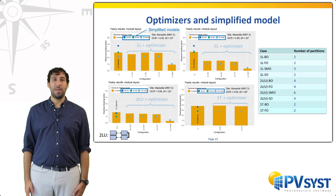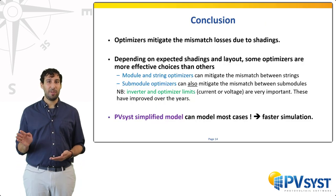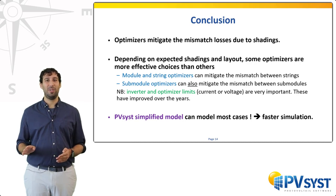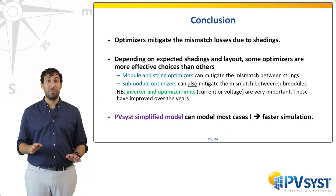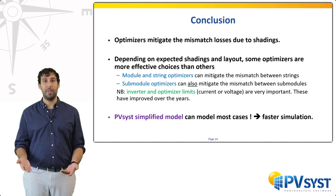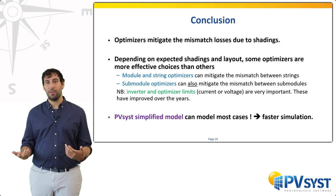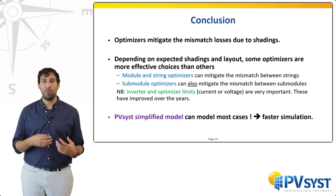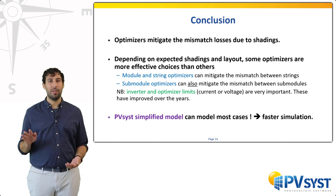To conclude, optimizers are effective at reducing the mismatch due to shadings. Depending on the system layout, some optimizer choices are more effective than others. Typically, whenever the shadings are regular, all types of optimizers can reduce the mismatch between strings. Submodule optimizers can even go a bit further and help recover the power from some diffuse irradiance. When designing a real system, it is important to consider cost and efficiency reduction, as well as extra limitations of the components — in this study we just focused on the shadings. Ultimately, factors like the inverter and optimizer limits are quite important to take into consideration. Finally, we have shown that in PVSyst, most situations can be modeled with a simplified model as well, unlocking the ability to simulate large regular systems in less time.